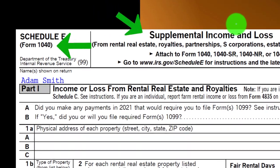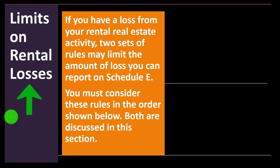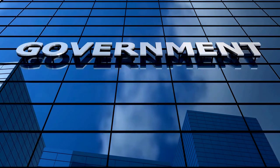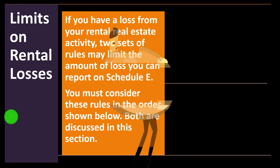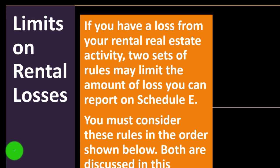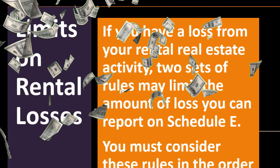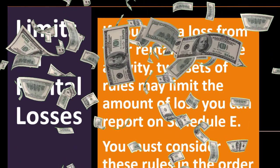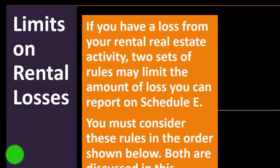Schedule E is basically the income statement schedule — the supplemental income and loss. We're focusing on rental real estate and continuing with limits on rental losses. When we have losses, the government is going to be more skeptical because it wants to be your silent partner when you have income, but doesn't want to pay you on a loss. With rental income, we're often engaging in rental property not just for rental income but also hoping the property goes up in value over time.